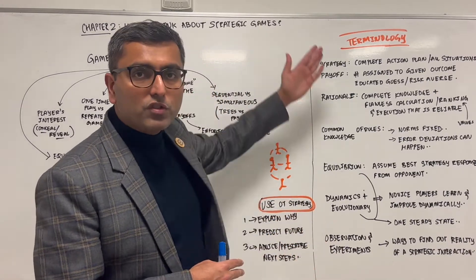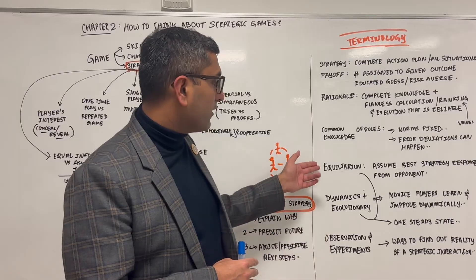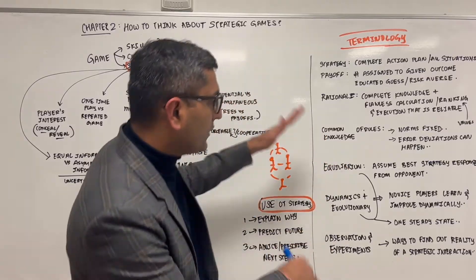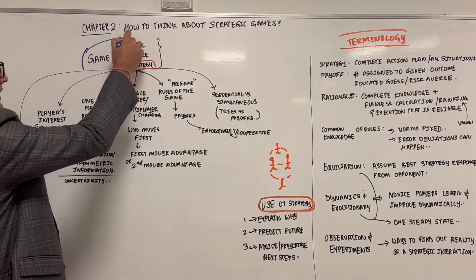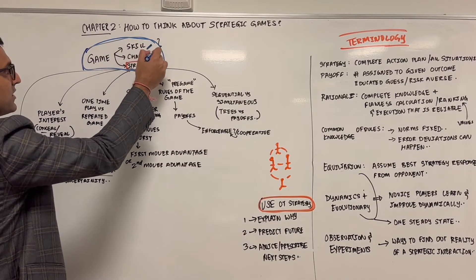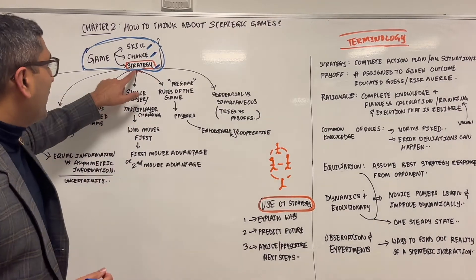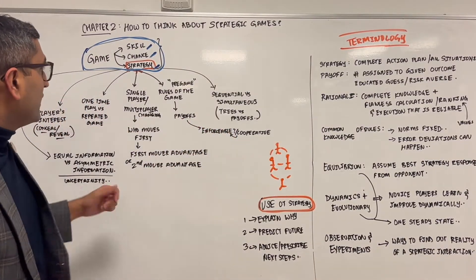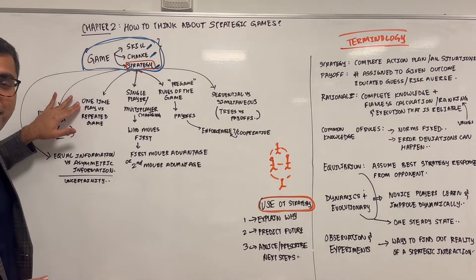These are terms we will use: payoff, running an experiment, equilibrium state, and rules of common knowledge. A game has three things needed to win: some proportion of skill, some proportion of luck, and a big proportion of strategy — where you can actually think through various aspects of a game. A game could be a one-time play versus a repeated play, and this is important.